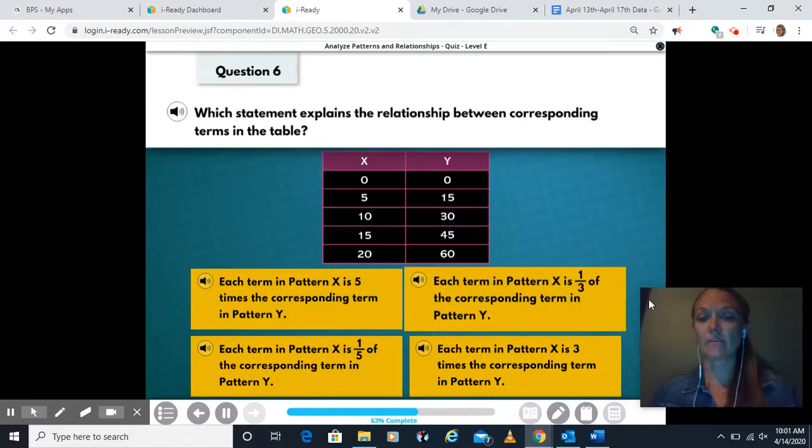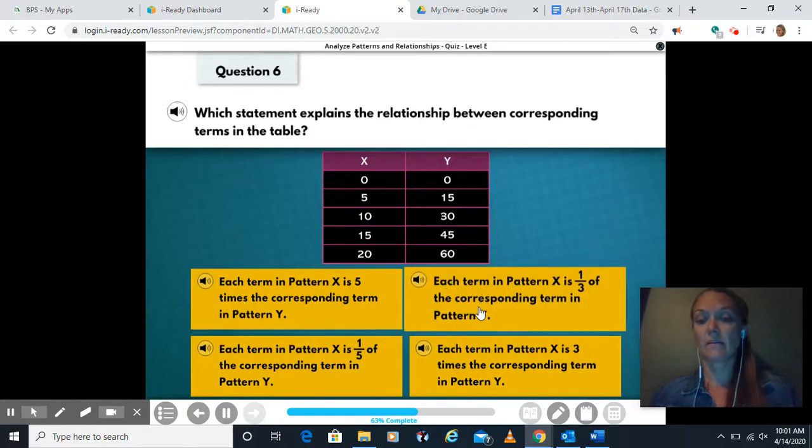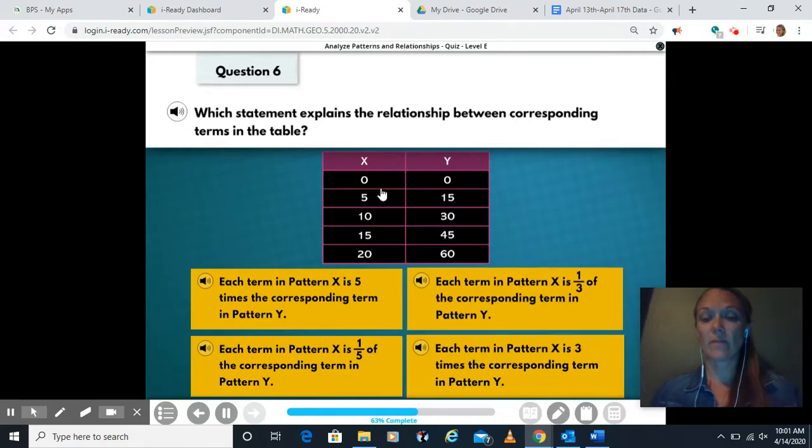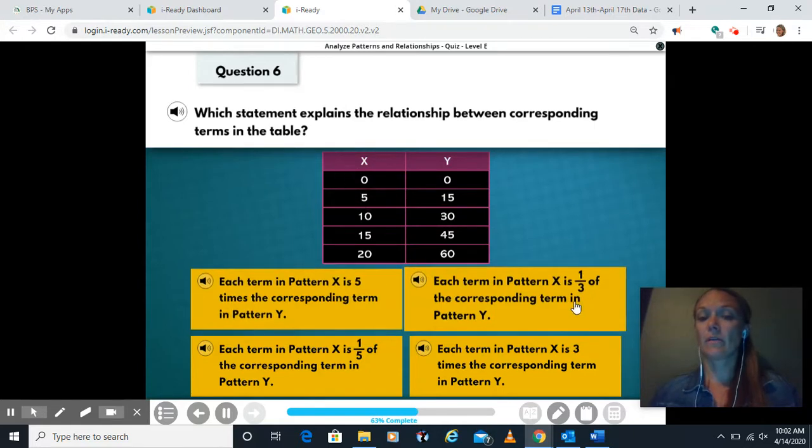Each term in pattern X is a third of the corresponding term in pattern Y. So is five a third of fifteen? Or is fifteen divided by three, five? Would thirty divided by three be ten? Forty-five divided by three be fifteen? Yes, so I like that one. Each term in pattern X is three times the corresponding term in pattern Y. So five is three times bigger than fifteen? No, it's a third of the size. It's actually, if I did fifteen divided by three, I would get five. This isn't five times bigger. These are the smaller numbers, so it's a third.